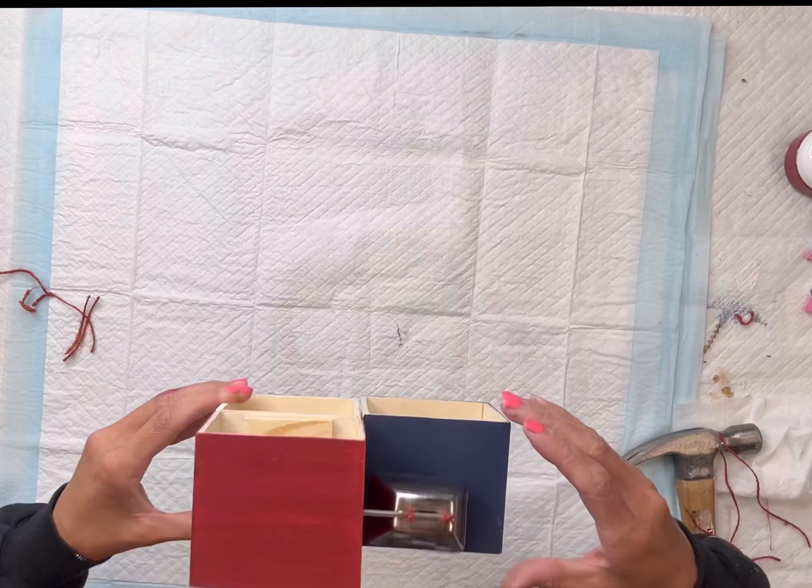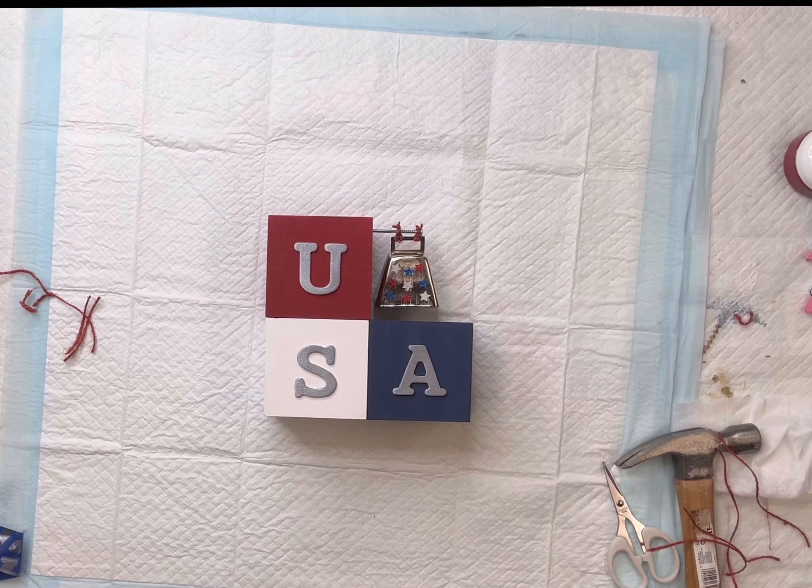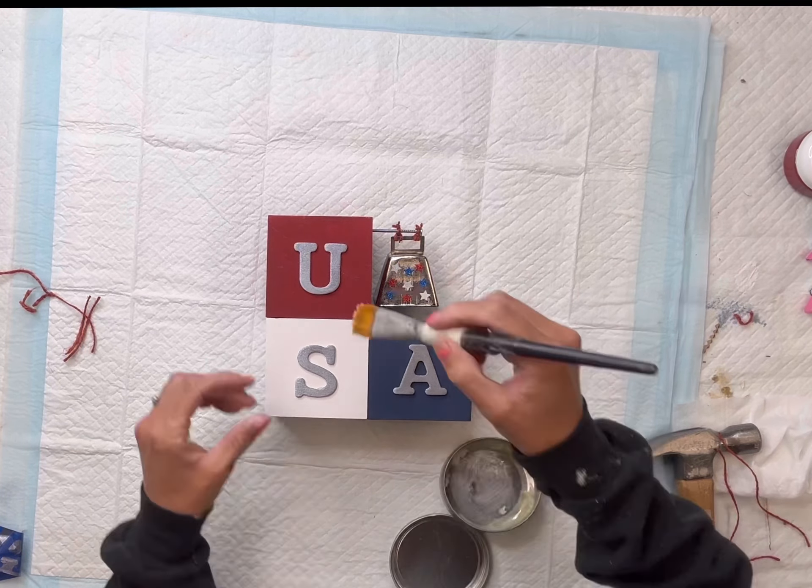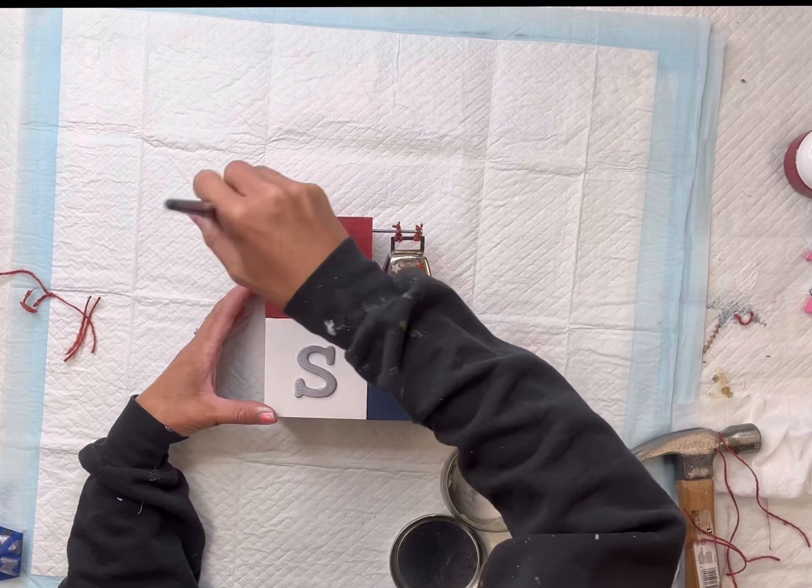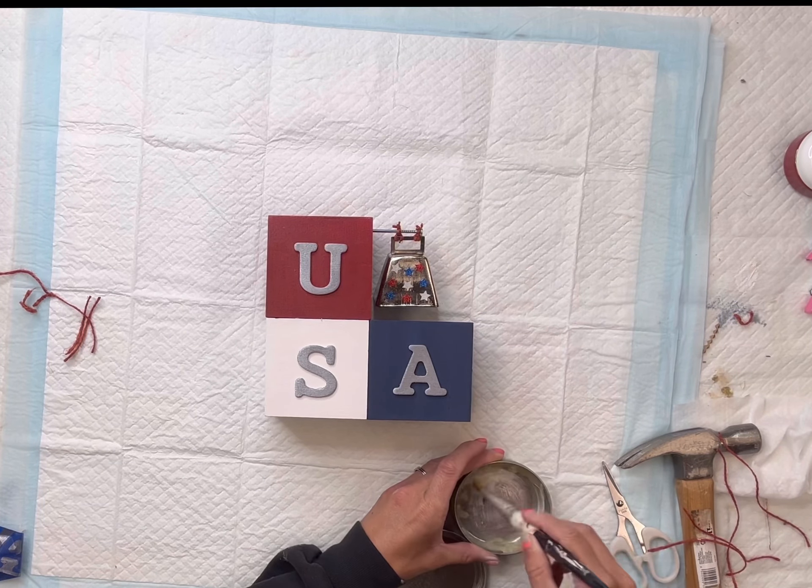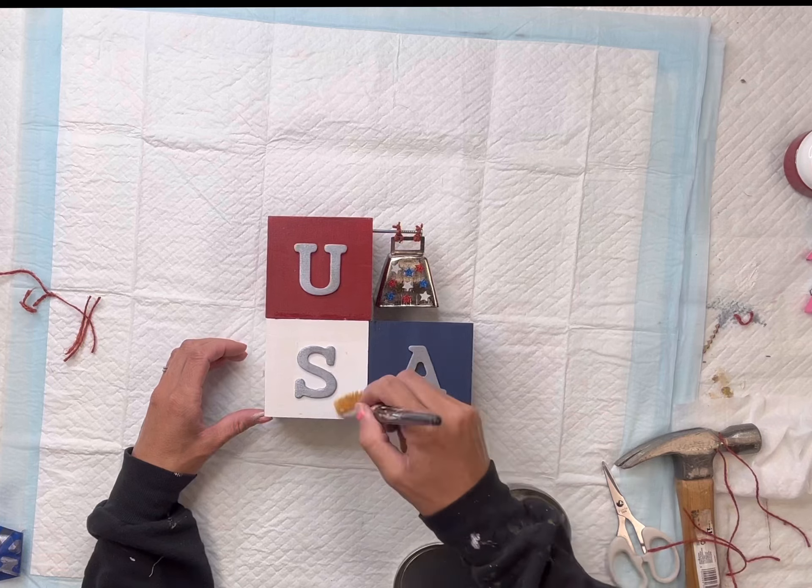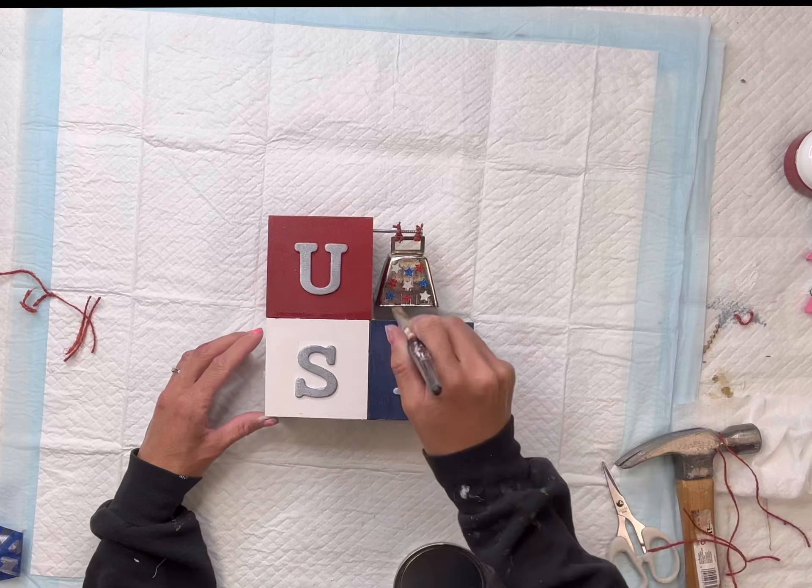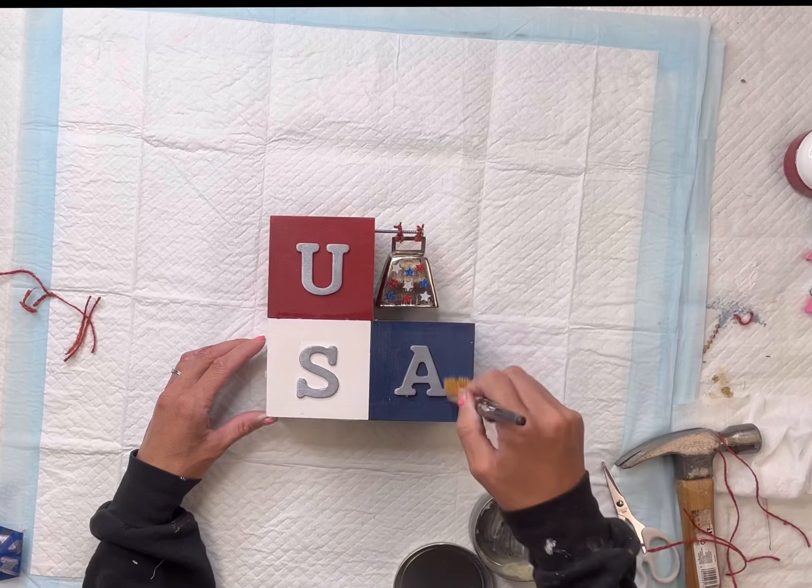And this is what we have so far. And to finish it off, I just took some of my Wise Owl furniture salve. This is a great top coat, especially for items that are just going to be staying indoors. And I do recommend you glue everything down before using it.